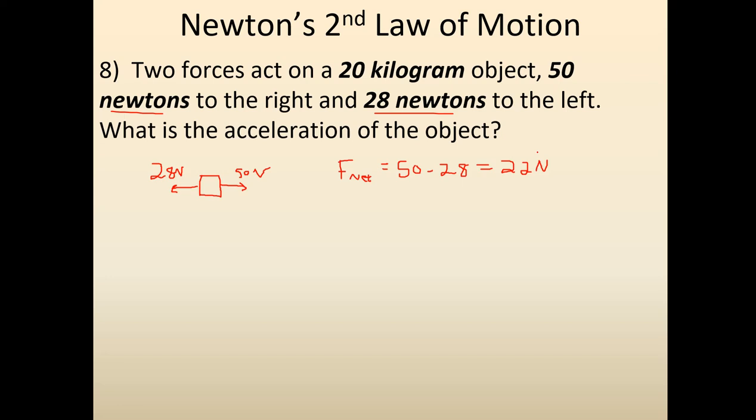So, once I have that number, I can now set in the F net equals MA equation. So, 22 newtons, 20 kilograms, and acceleration, divide both sides by 20. And then, what we're going to end up getting is, I believe, 1.1. Let me just double check. Yeah, 1.1. Meters per second squared.